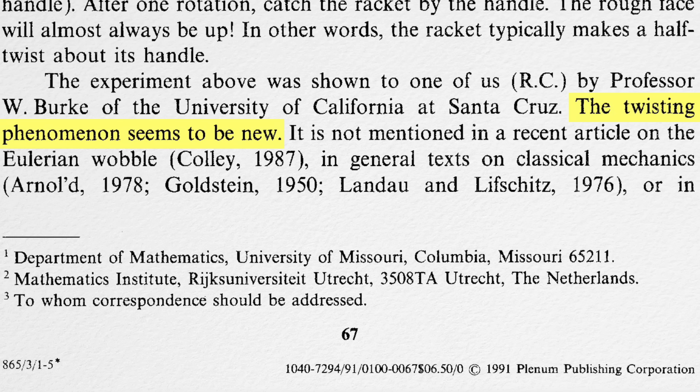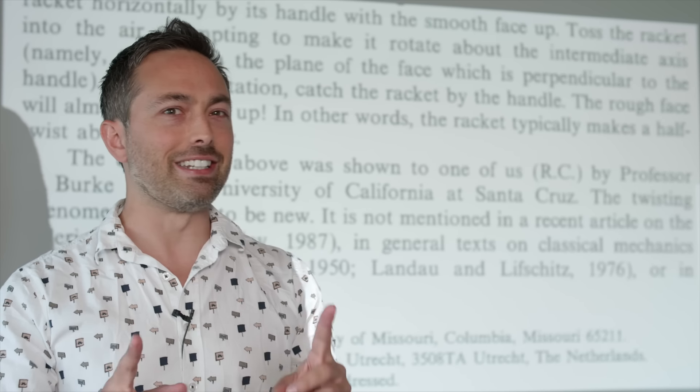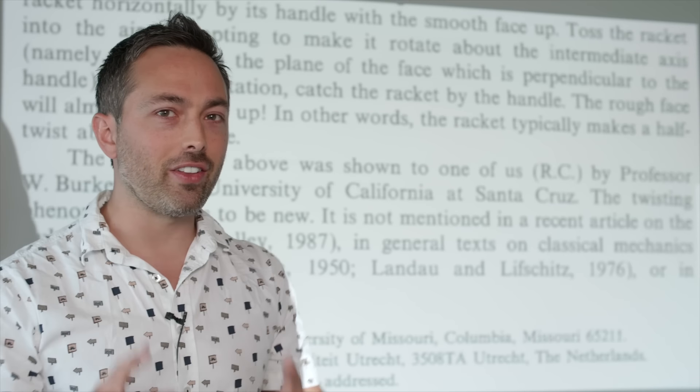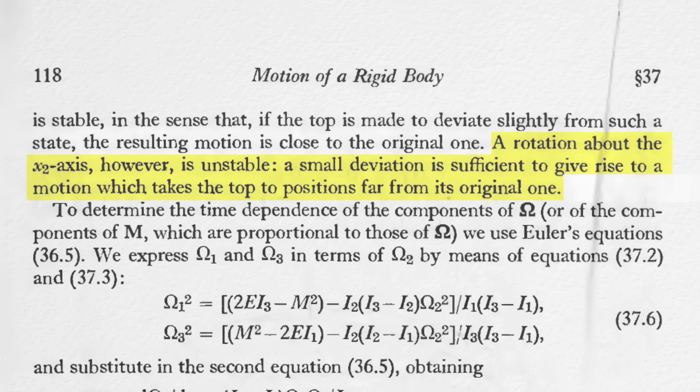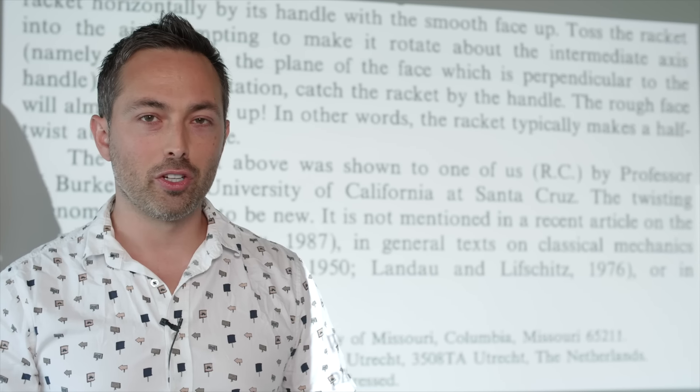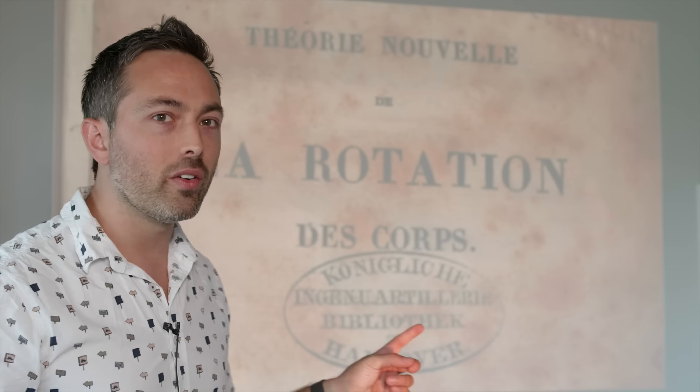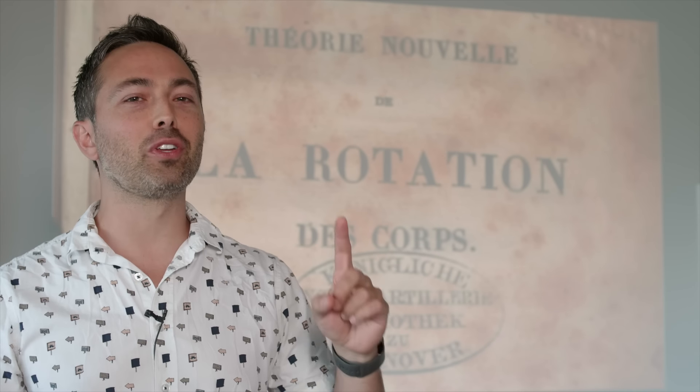Now, the tennis racket paper claims the twisting phenomenon seems to be new. It is not mentioned in general texts on classical mechanics, amongst other sources that they've checked, but it is actually. It's even in the textbook they cited, Landau and Lifshitz.